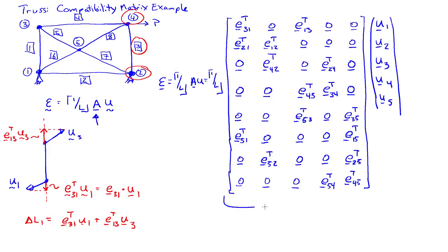So this here is A. That's the compatibility matrix. And when I multiply by U, and then I divide through by 1 over the bar lengths, then I end up with the strains in the bars.